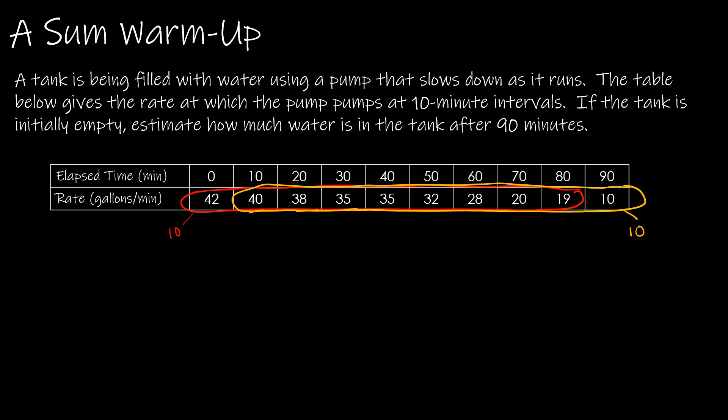So this one's taking the left end point and this one's taking the right end point. And then there's also one where you could find the midpoint. So use 41 and use 39.5 and so on and then take each of those midpoints times 10. So those are different ways that you might go about it. Some also just find the average, but that doesn't really fit into where we're going with this. So we'll look at these three: left, right and midpoint.